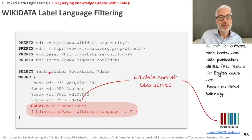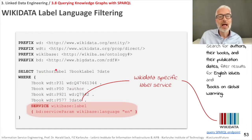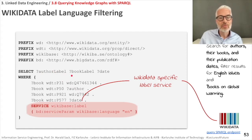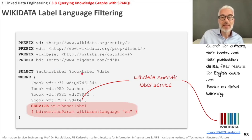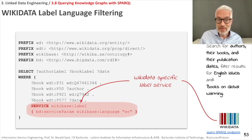You simply use 'author' as your variable name and extend it by 'Label' written in camelCase with a capital L. Similarly, for book you use 'bookLabel' instead of 'book', and then you see the labels directly. This is specific to Wikidata.